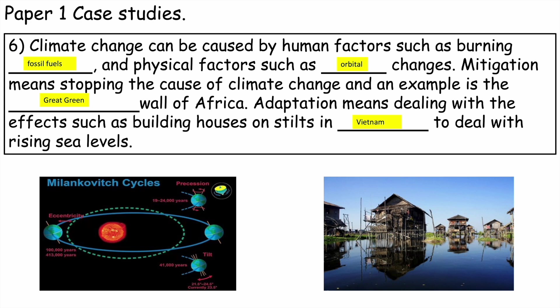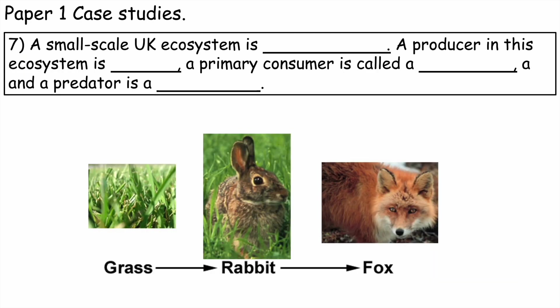Number seven: a small-scale UK ecosystem is Sandwell Valley — we tend to look at the woodland area. A producer in this ecosystem is grass. A primary consumer that eats the producer is a rabbit, and a predator in this ecosystem is a fox. Remember that producers make their own energy from the sun via photosynthesis.